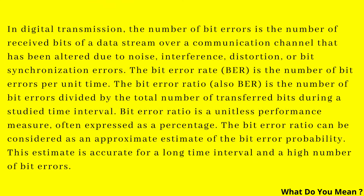In digital transmission, the number of bit errors is the number of received bits of a data stream over a communication channel that has been altered due to noise, interference, distortion or bit synchronization errors. The bit error rate is the number of bit errors per unit time.